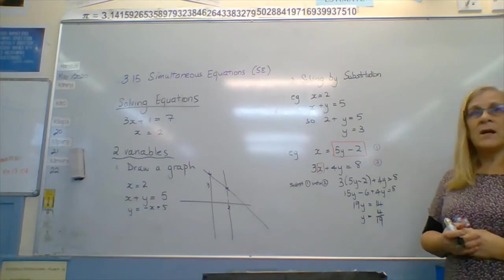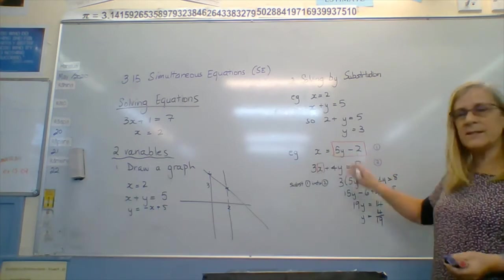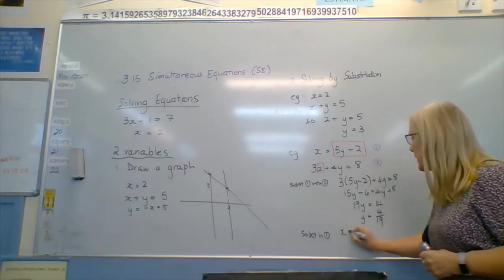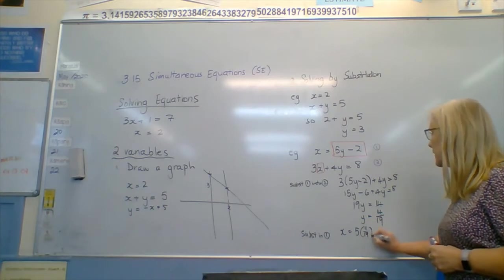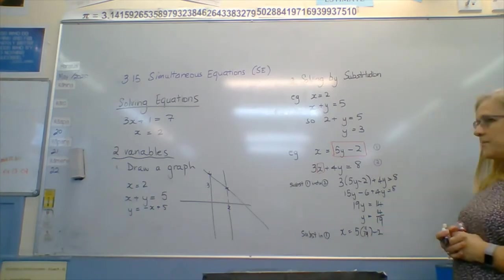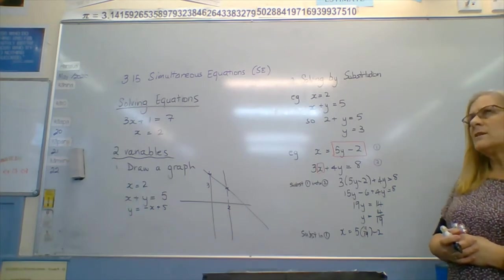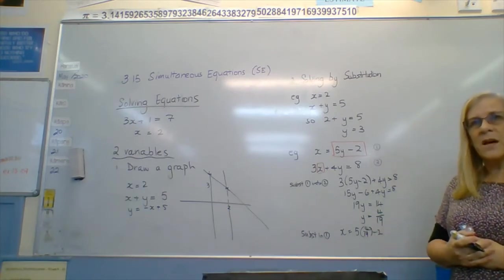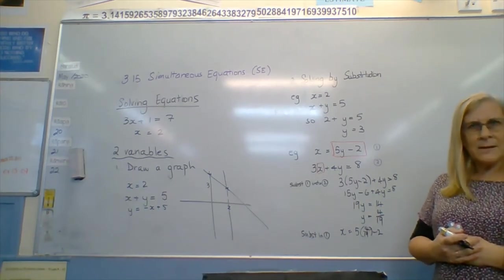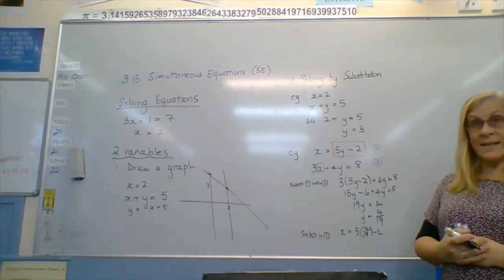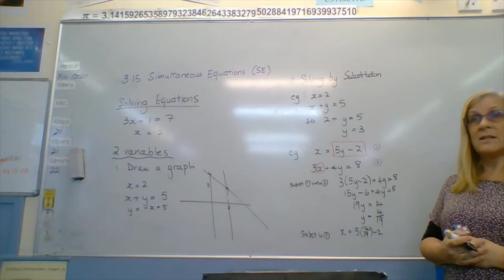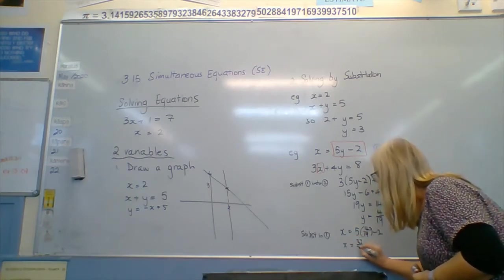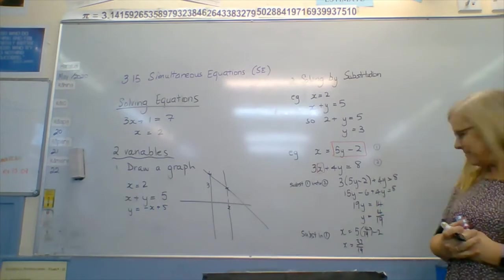Perfectly wonderful number. We don't have x, so we go back to where it says x equals this. And we substitute in. You can substitute into either of them, but the one that says x equals is the easier one. x equals 5 lots of 14 over 19 minus 2. That's 70 over 19 minus 38 over 19, is 32 over 19. So x equals 32 over 19.